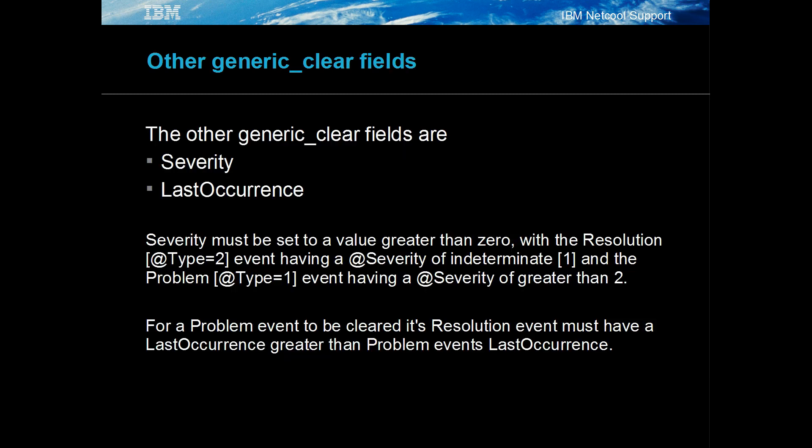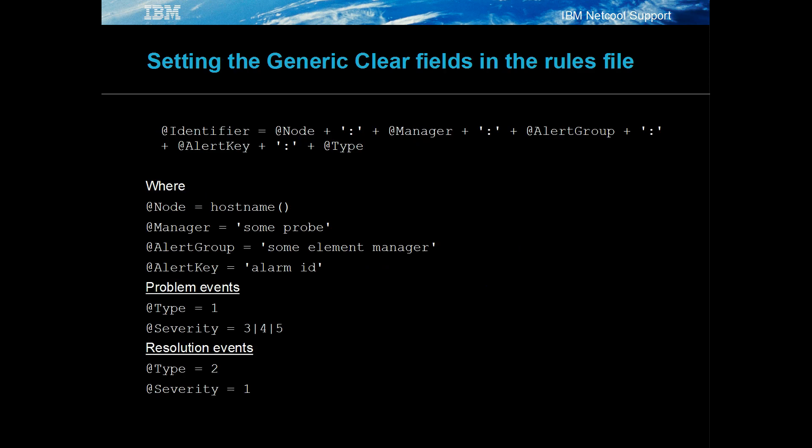The other fields are severity, which is greater than 0 and typically set to 1 for a resolution event and greater than 2 for problem events, and last occurrence, which is a Unix timestamp in seconds. To enable generic clearing for an event type in the probe's rules file, the @identifier must be unique for problem and resolution events. This is done by adding the @type value to the @identifier, meaning @identifier is typically defined after all the event processing is completed, given the event's other fields are typically defined based on the event's tokens.